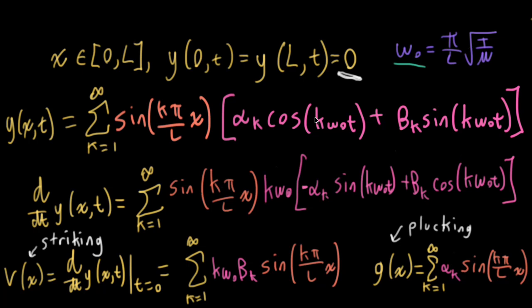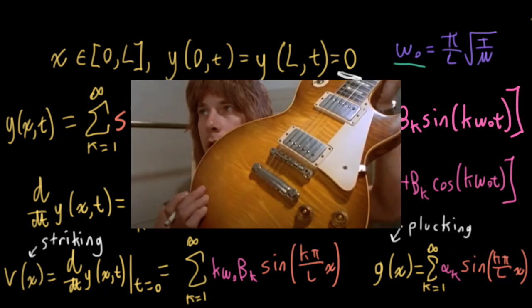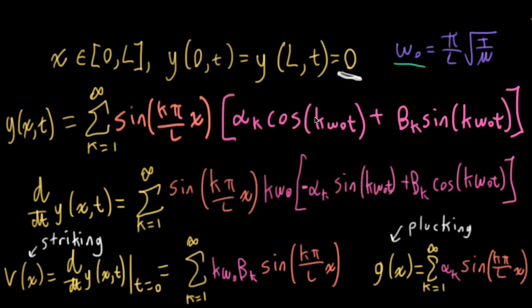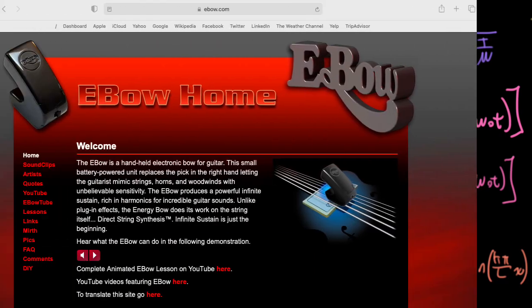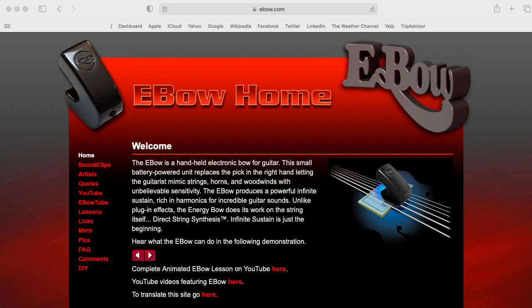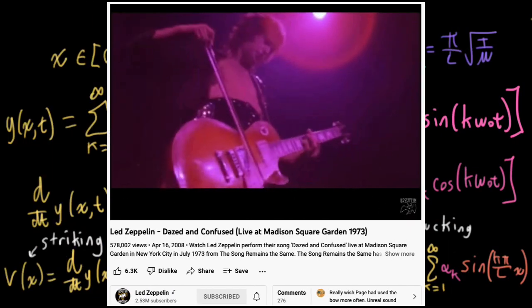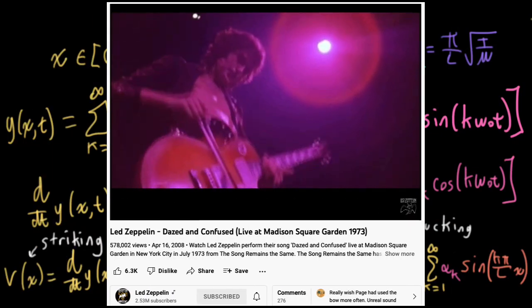So any real vibrating string is going to have many more complicated effects. In particular, we've ignored damping here, so our string vibrates forever. Of course, any real guitar or piano or whatever will have decaying amplitude over time, unless you somehow put more energy into it with something like an e-bow, or say you're using a violin bow on your guitar like Jimmy Page.